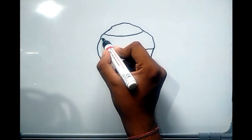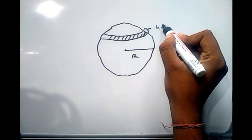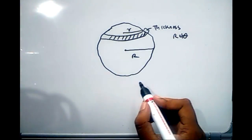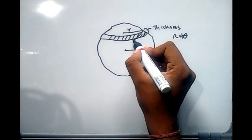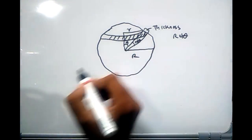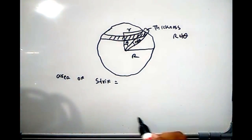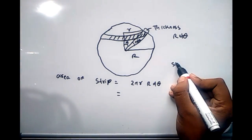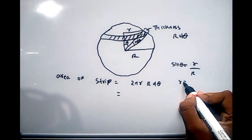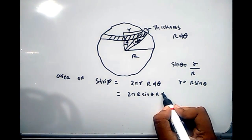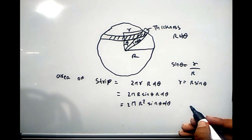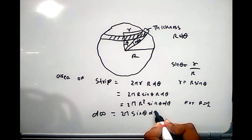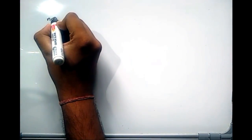The area element dA of a strip on a sphere equals 2πr (the circumference of the circle drawn on the strip) times r dθ (the thickness). Since sinθ = r/R, we get r = R sinθ, so dA = 2πR² sinθ dθ. Putting R = 1 for a unit sphere, dA = dΩ = 2π sinθ dθ.